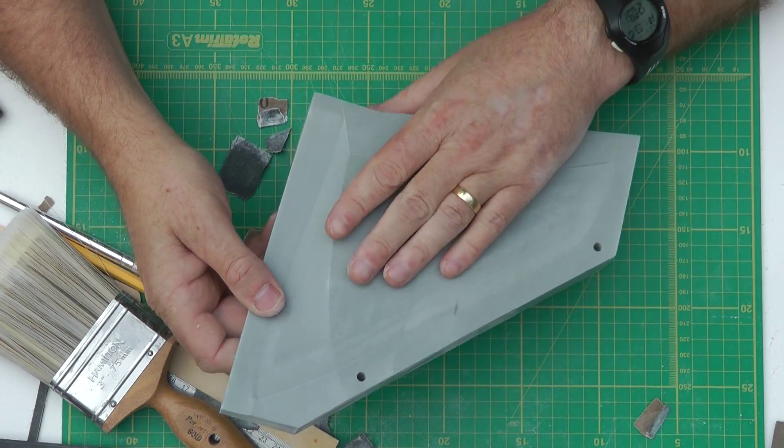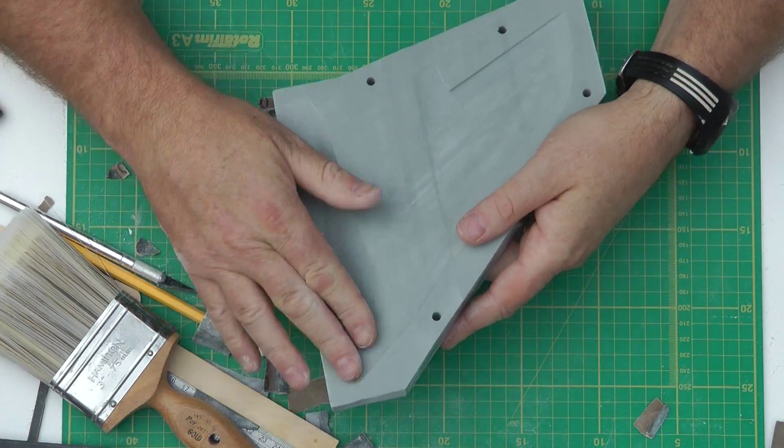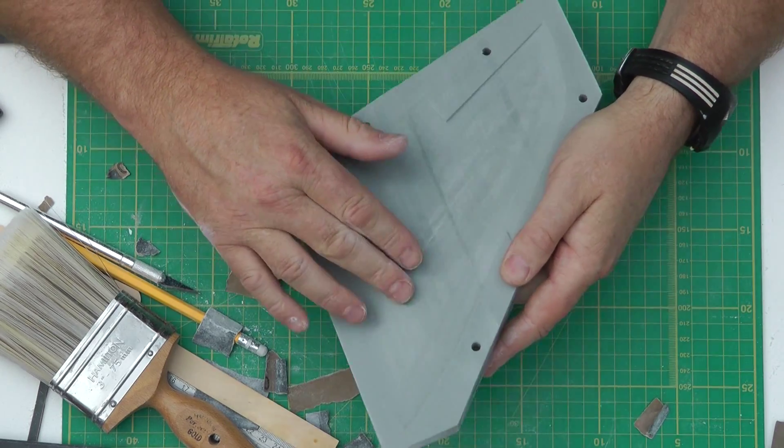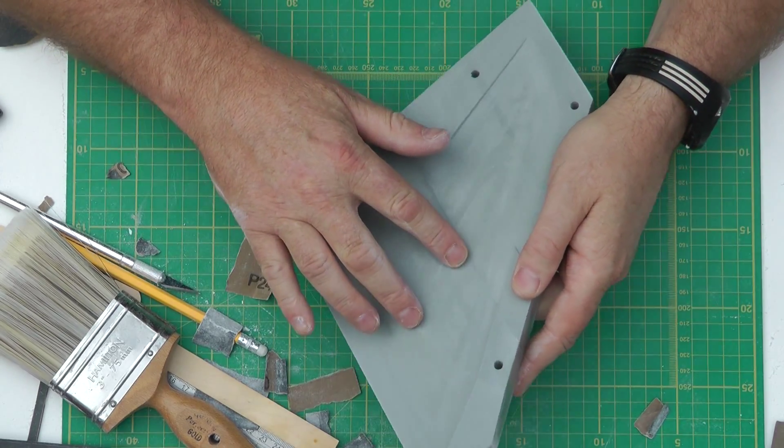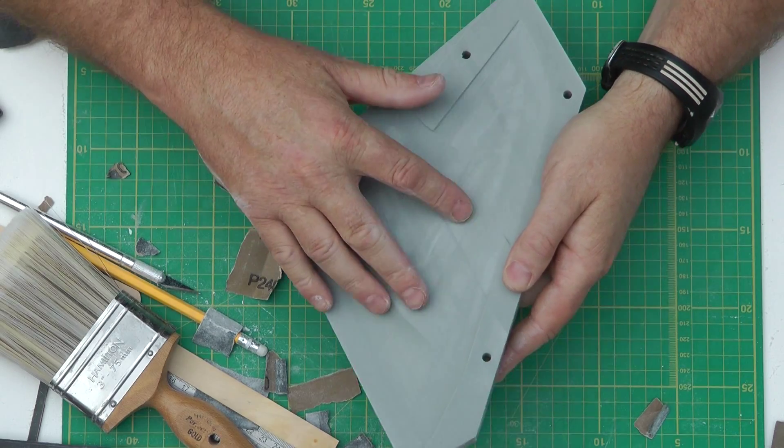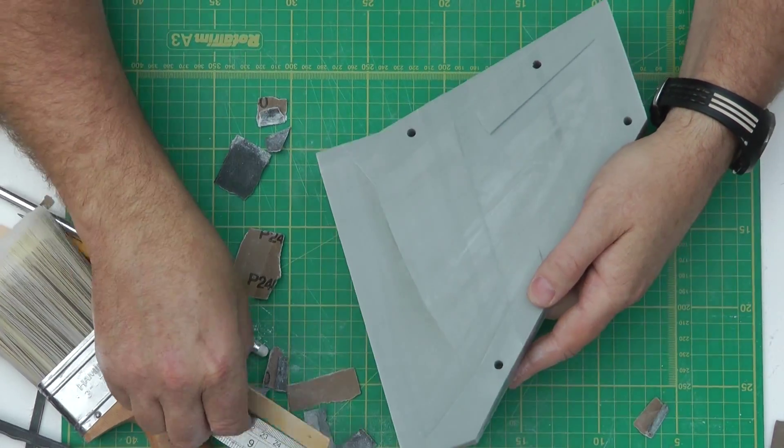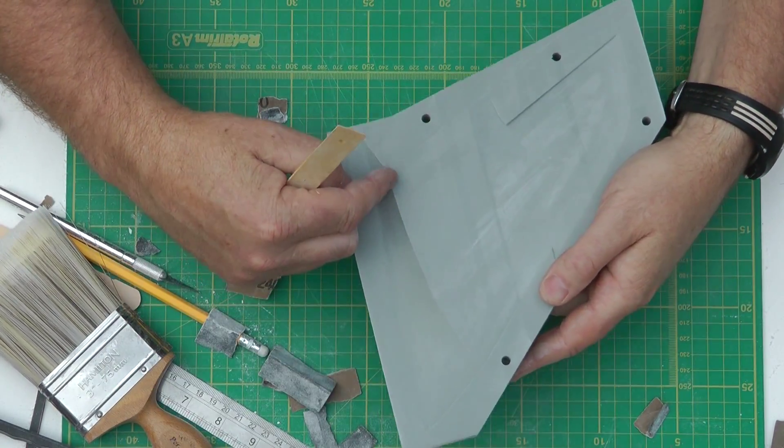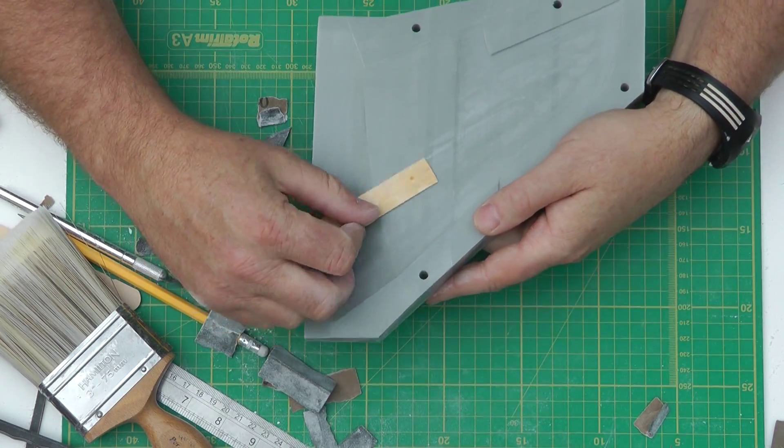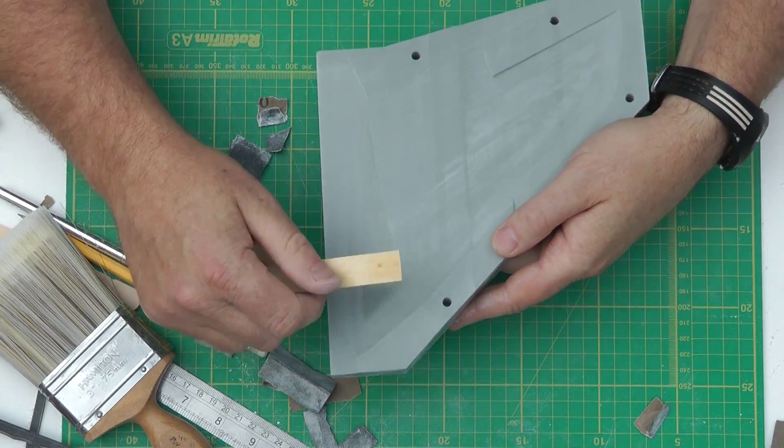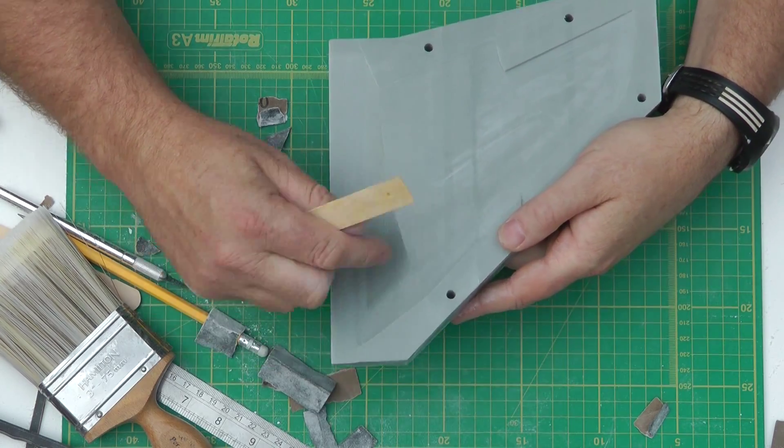So now that I've done that, I'll sand probably this whole wing section, doing probably this panel here first, taking care not to roll this edge here. I'm going to try and keep this edge really crisp, where the inlet on the wing is. It's a saddle I suppose you could call it.